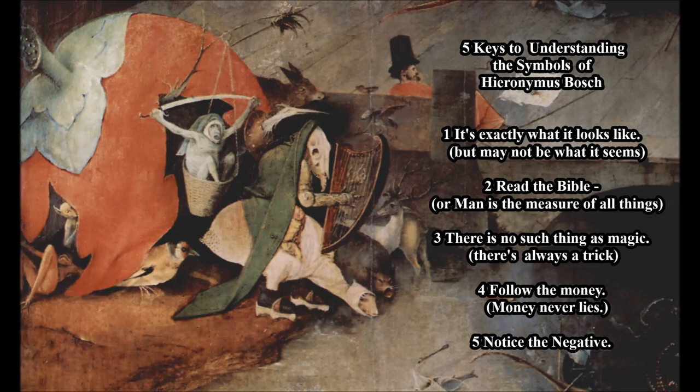There's actually no part of this little symbol that is magic, so we don't have to worry about that. And we can follow the money, because a naked man has no money but needs money. Notice the negative — he's silhouetted against, he stands out against that rotten fruit behind him. And finally, he is in a basket.